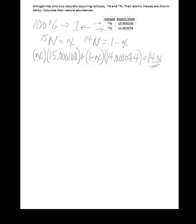So when you do the math here, what you get is 15.000108X plus, you take the 1 and you multiply by the natural abundance of N14 to expand this term. So it's 14.003074. And then you take the negative X and you also multiply it by the natural abundance for nitrogen. So you're going to get minus 14.003074X, and still all being equal to 14.01.